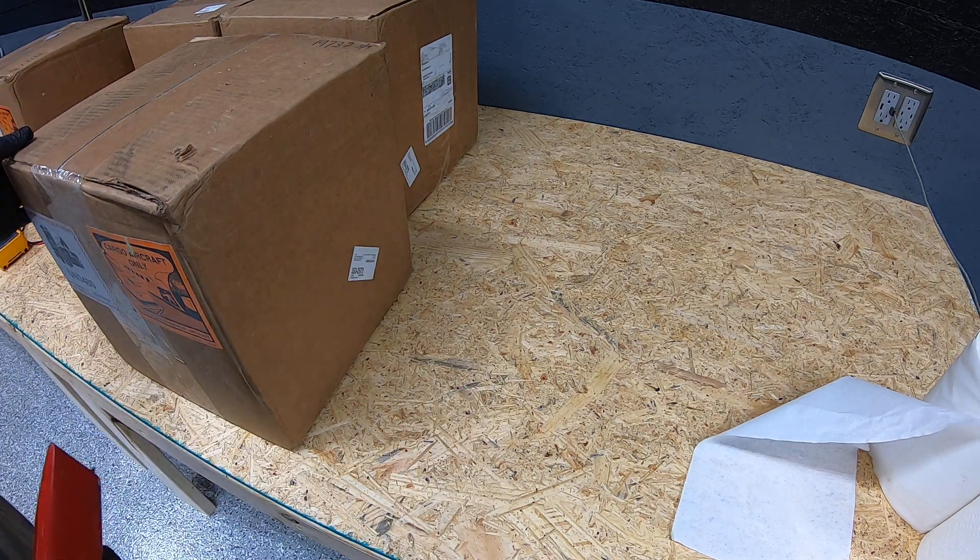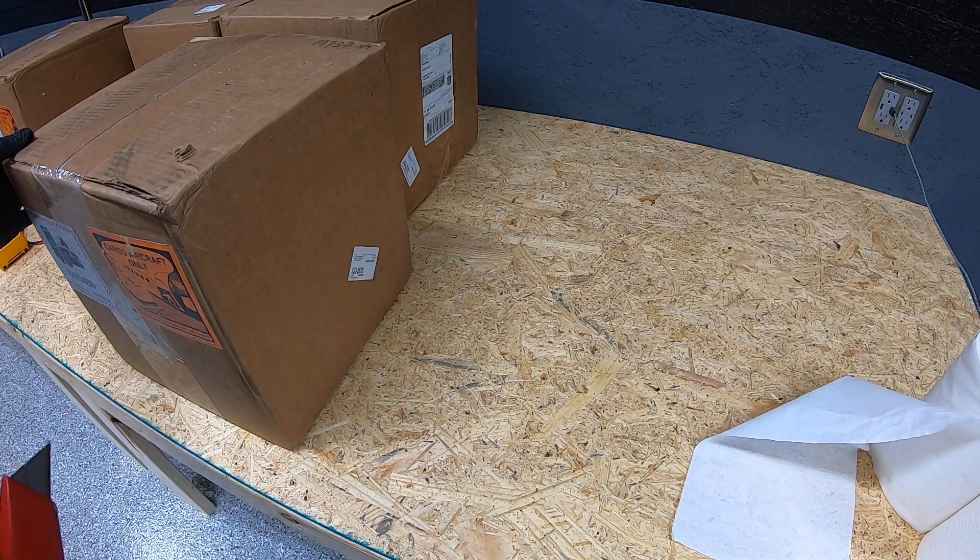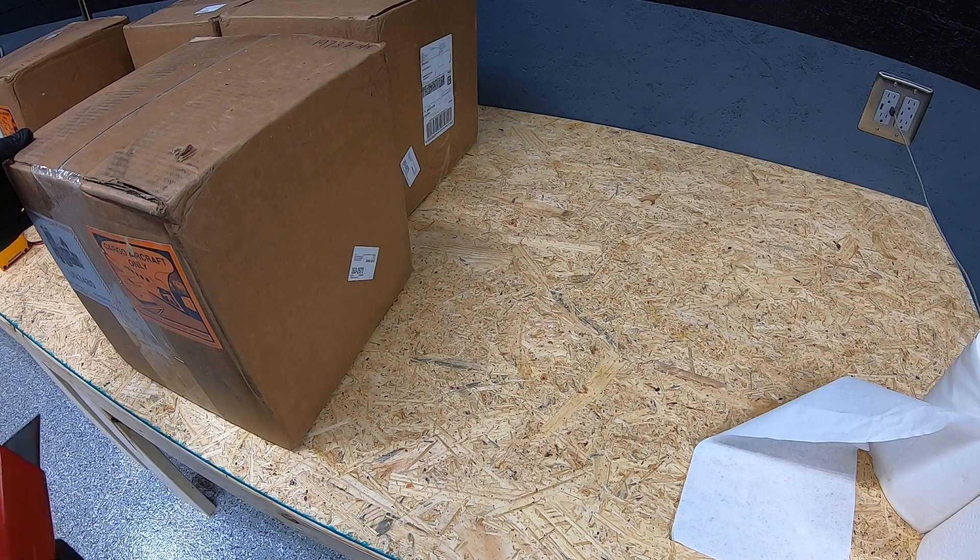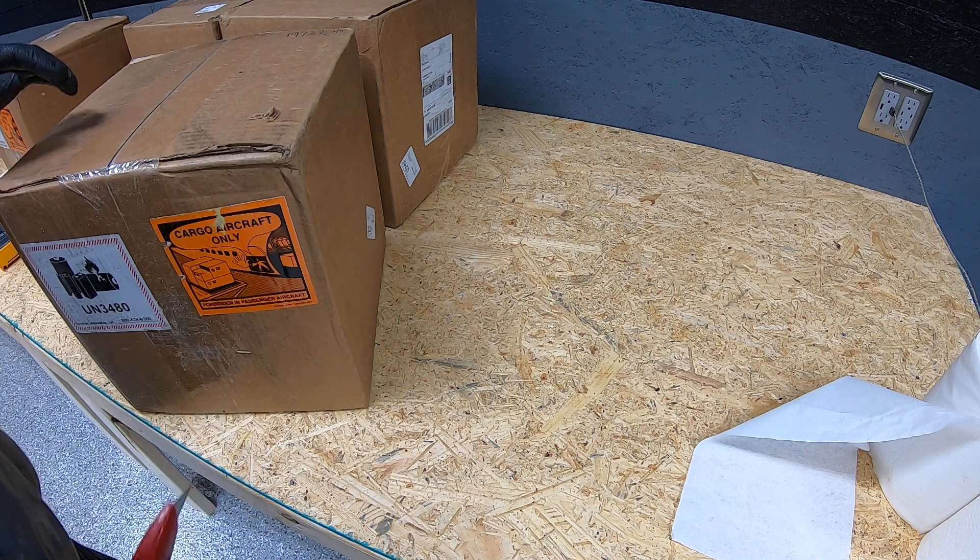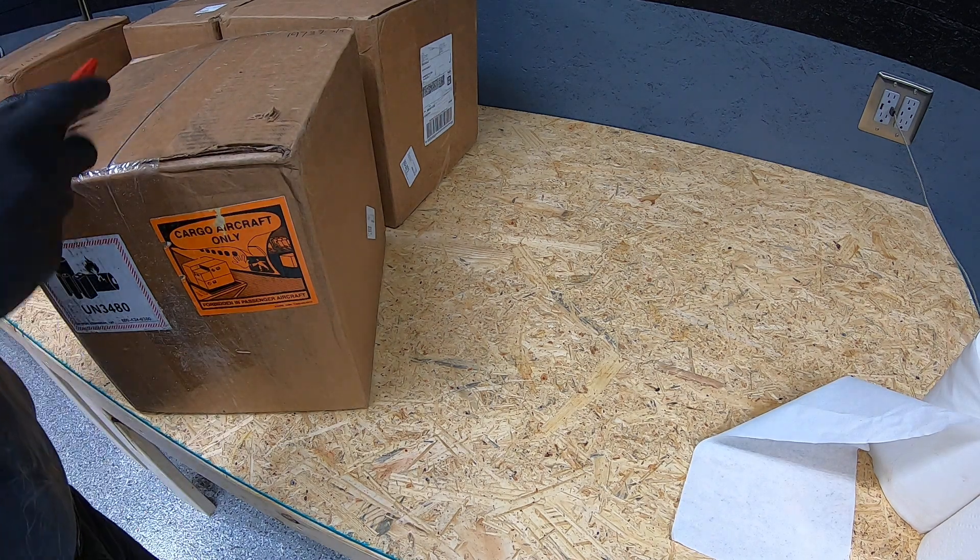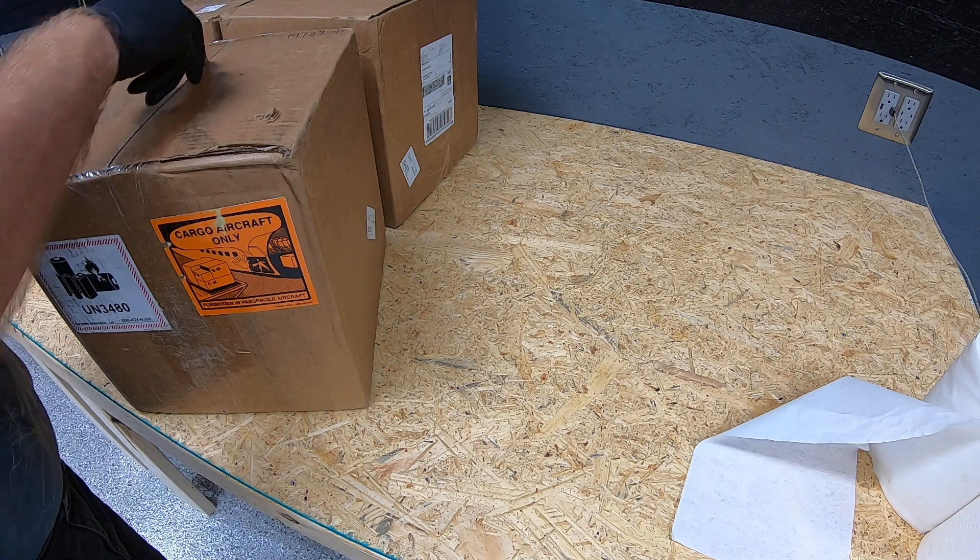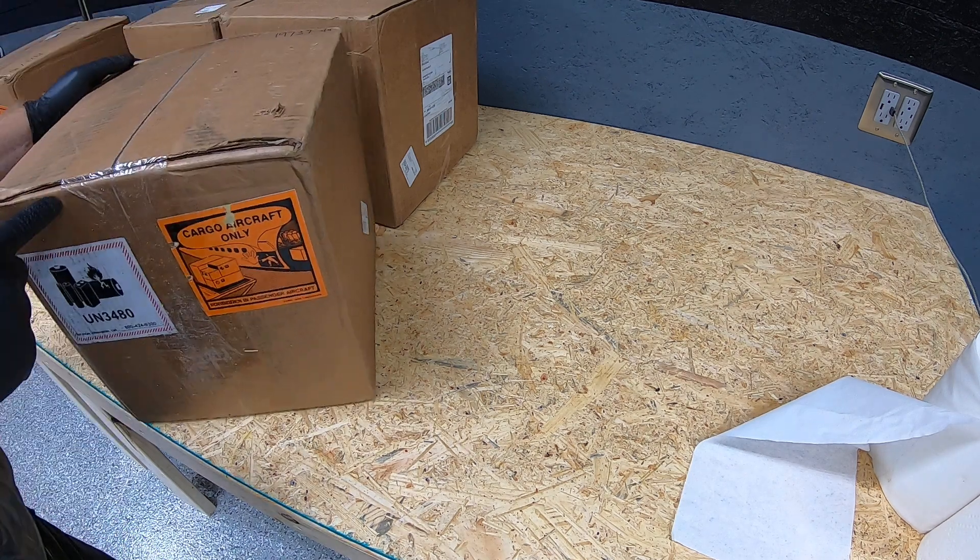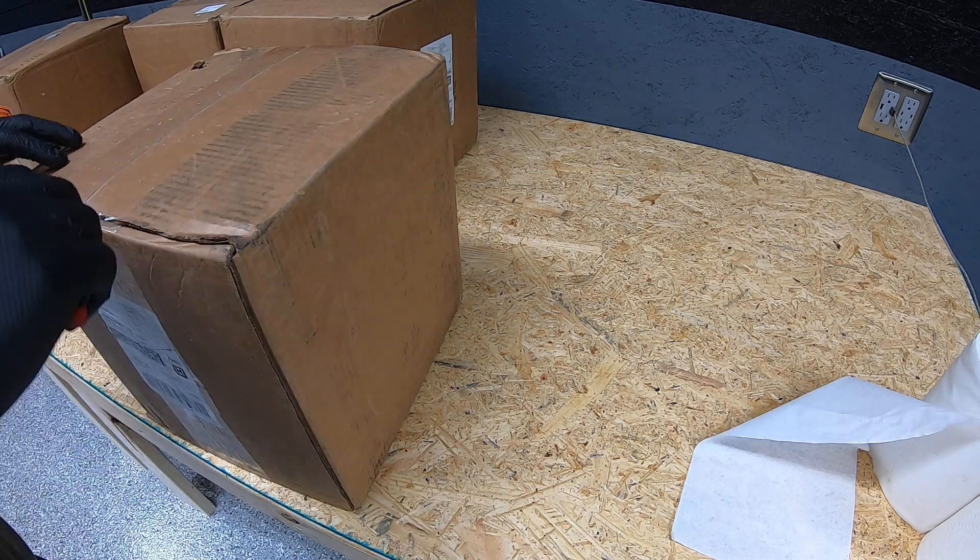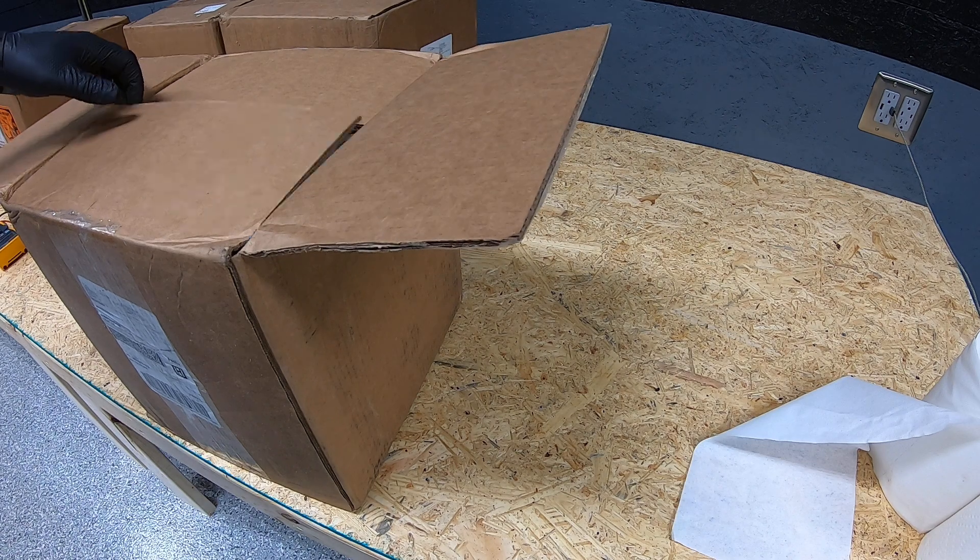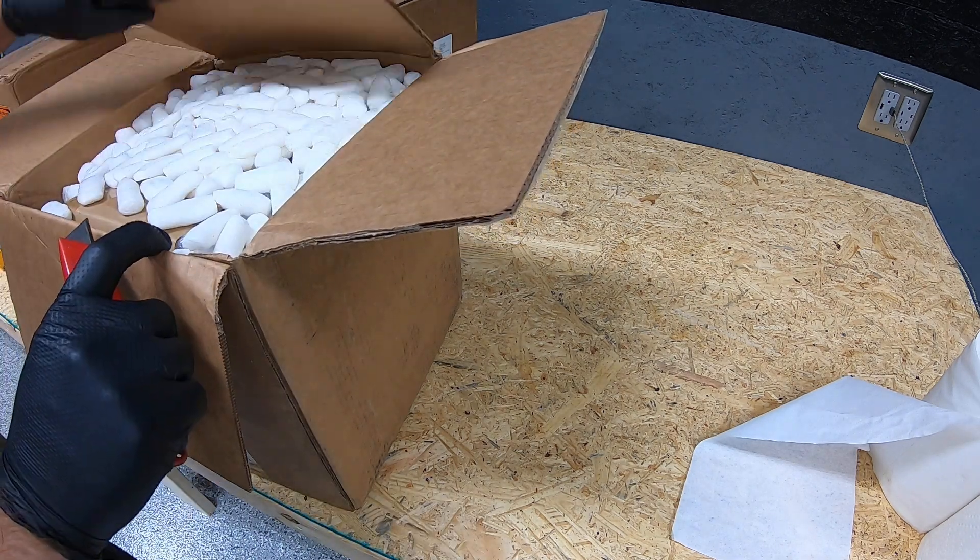I got about four boxes here and they contain from Battery Hookup 16 180 amp hour cells that were used for their website and out of their VW conversion, an electric VW, so I assume conversion.